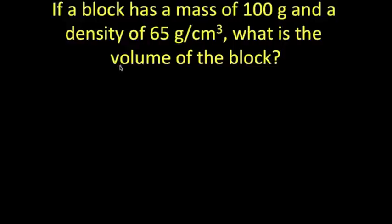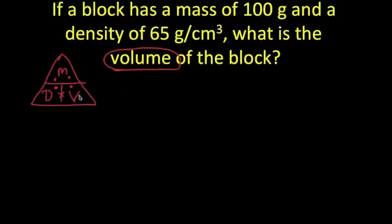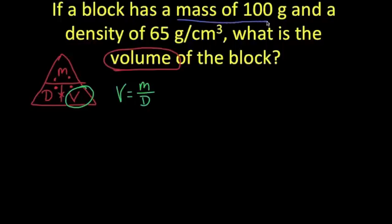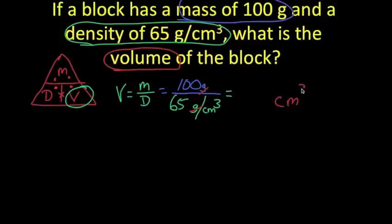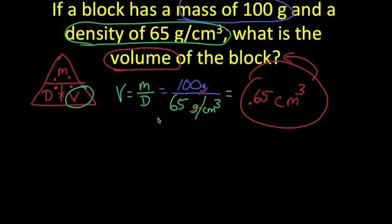Here we're told that a block has a mass of 100 grams and a density of 65 grams per cubic centimeter — they're asking us for the volume. So we set up our formula triangle and solve for volume: volume equals mass divided by density. Our mass is 100 grams and our density is 65 grams per cubic centimeter. When we divide grams by grams per cubic centimeter, the grams cancel out and leave us with cubic centimeters. 100 divided by 65 gives us a volume of 0.65 cubic centimeters.